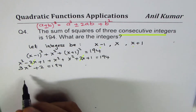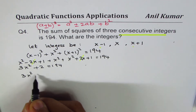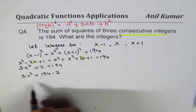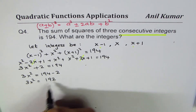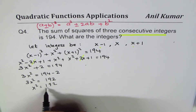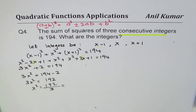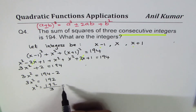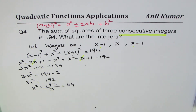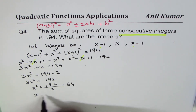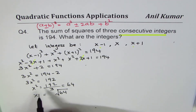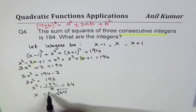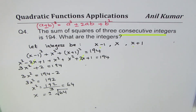We take 2 to the other side: 3x squared equals 194 minus 2, which is 192. Then x squared equals 192 divided by 3, which equals 64. So x equals the square root of 64. Whenever you take a square root you should consider both positive and negative values.